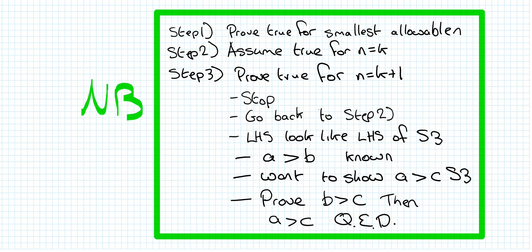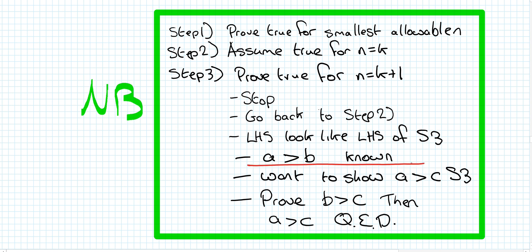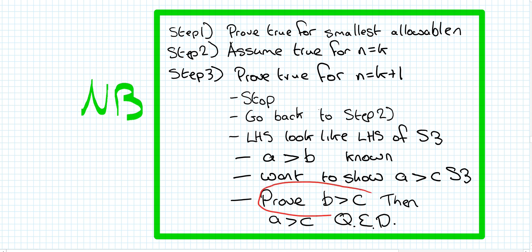The key steps for the question: Step 1 — prove true for smallest allowable n. Step 2 — assume true for n equals k. Step 3 — prove true for n equals k plus 1. Then stop and go back to step 2. Make the left hand side of step 2 look like the left hand side of step 3 — in this example, multiply both sides by 2. Write down a greater than b (that's what you now know). You want to show a greater than c (from step 3). So actually prove that b is greater than c — the right hand side of modified step 2 is greater than the right hand side of step 3. That proves a is greater than c.